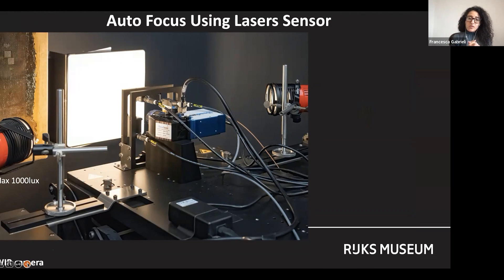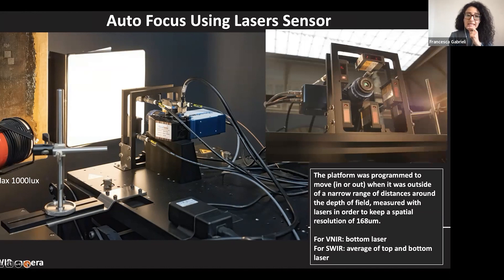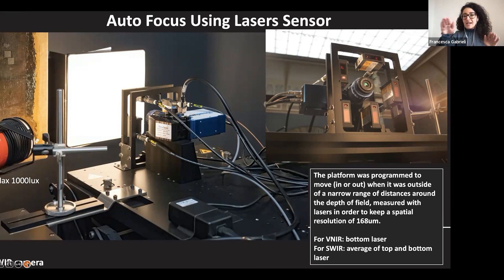On the platform we used a SWIR camera from Headwall, sitting with two lights in front of a white reference spectrum used for calibration. We also used a visible camera working from 400 to 1000 nanometers; the SWIR camera works from 900 to 2500 nanometers. Because the painting is not flat — deviating from a plane by about three centimeters — we needed to create an auto-focusing system so that during scanning the cameras could move back and forth with respect to the painting to keep the same spatial resolution across the entire scan.